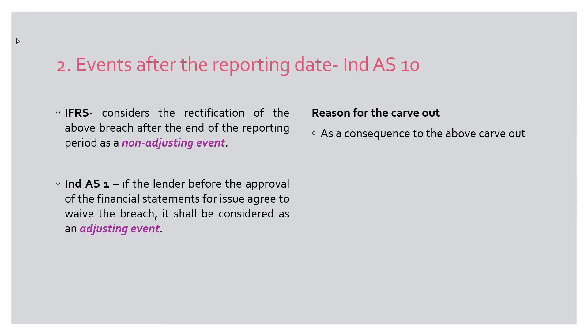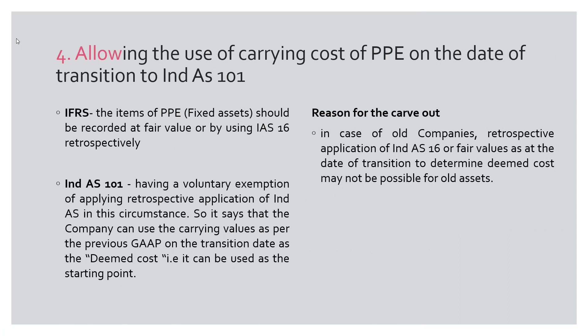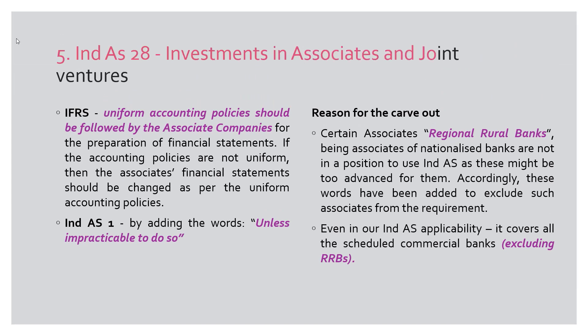So financial statements can be adjusted with respect to this. The third carve-out is on the definition of 'previous GAAP' — in the Indian environment, previous GAAP refers to the notified accounting standards by the MCA. The fourth carve-out is on using the carrying cost of items of property, plant and equipment, where the cost under the old accounting standard can be used as a starting point in Ind AS. The fifth carve-out is on Ind AS 28, which deals with investments in associates and joint ventures — regional rural banks, even if associates of nationalized banks, are not required to follow uniform accounting policies under Ind AS as it is too advanced for them.